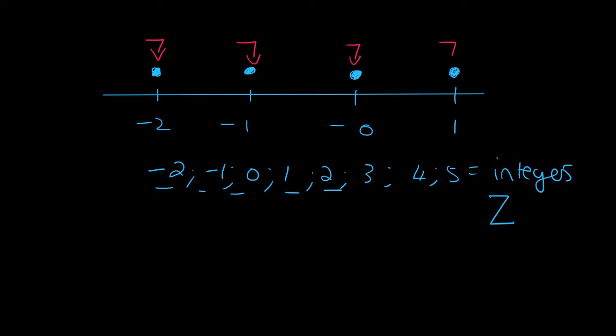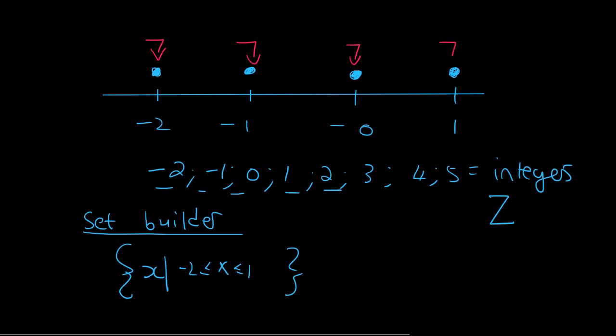So in set builder notation it will look like this. We have the funny brackets. We're still working with x. x is going to go from -2 up to 1. So x must be bigger than -2, smaller than 1. That doesn't change. It's this part here where we say x is an element. We're not going to use R. We're going to use Z. So Z means integers.